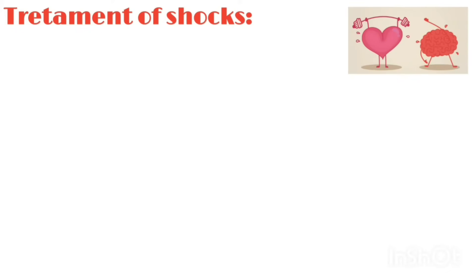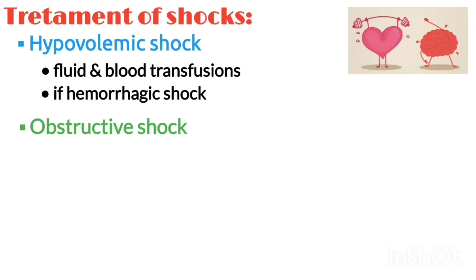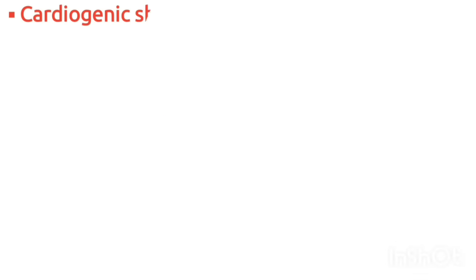Now we are moving towards the treatment options of all four types of shock. Hypovolemic shock is treated with fluids and blood transfusion if it is hemorrhagic. Obstructive shock is treated by addressing the underlying cause, such as pericardial tamponade and pulmonary embolism.